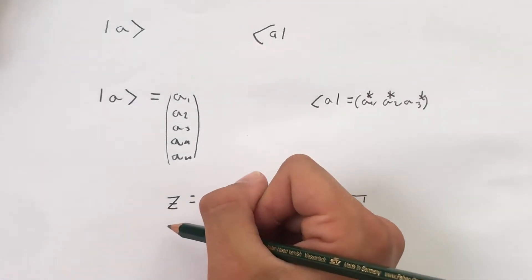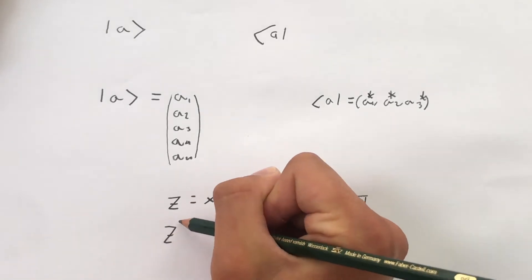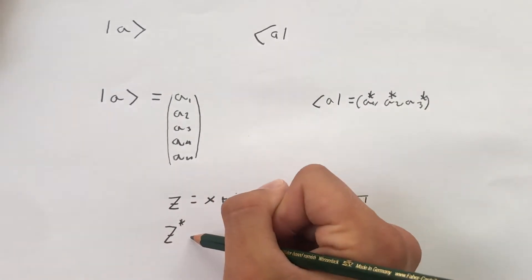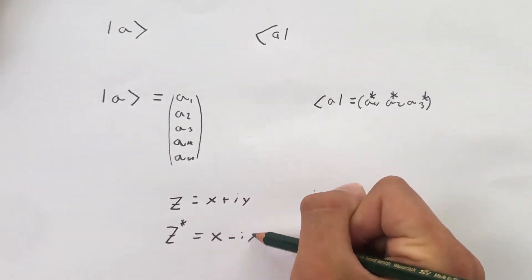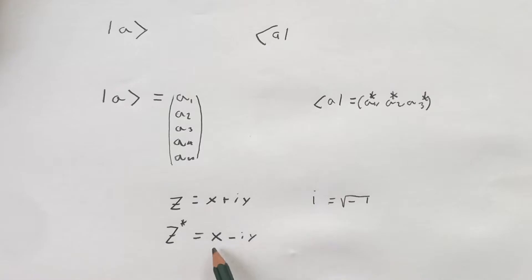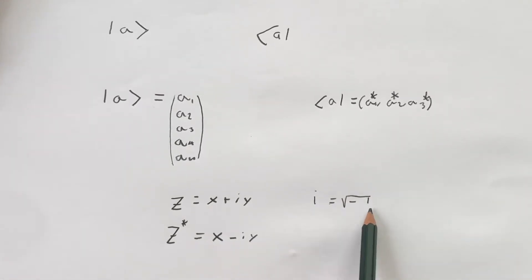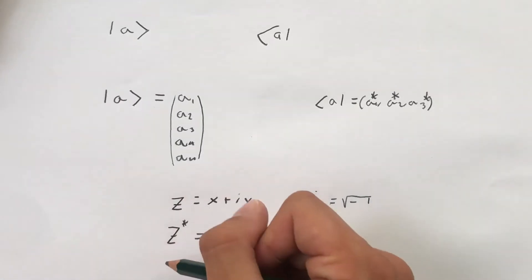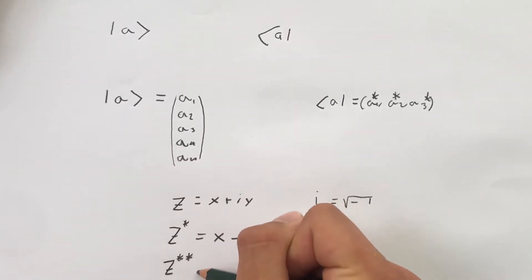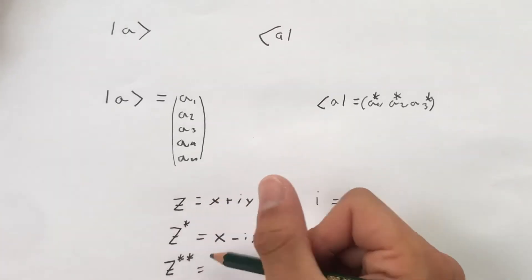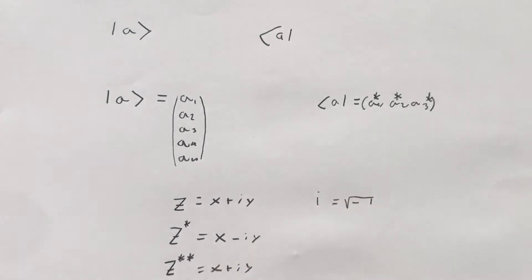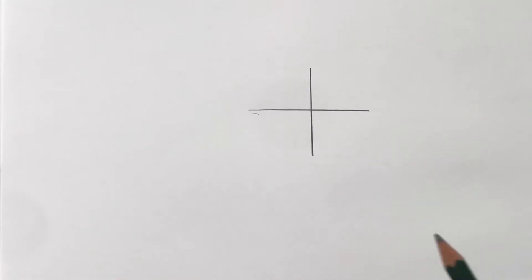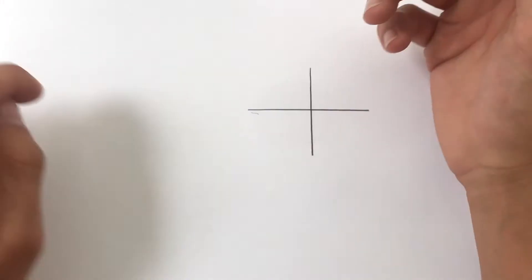And then a complex conjugated number, that looks like this with a star up here, is simply, it couldn't be easier, it's x minus i times y, where yet again x and y are real numbers and i is the imaginary term. And if you choose to double complex conjugate a number like this, you will simply get the term you started with: x plus i times y.